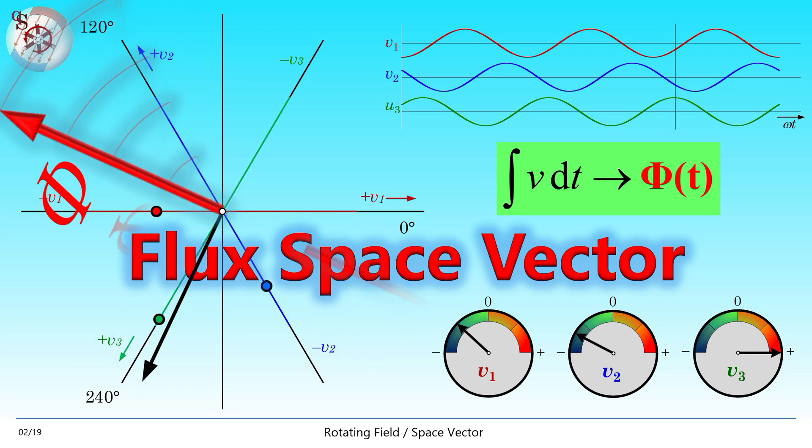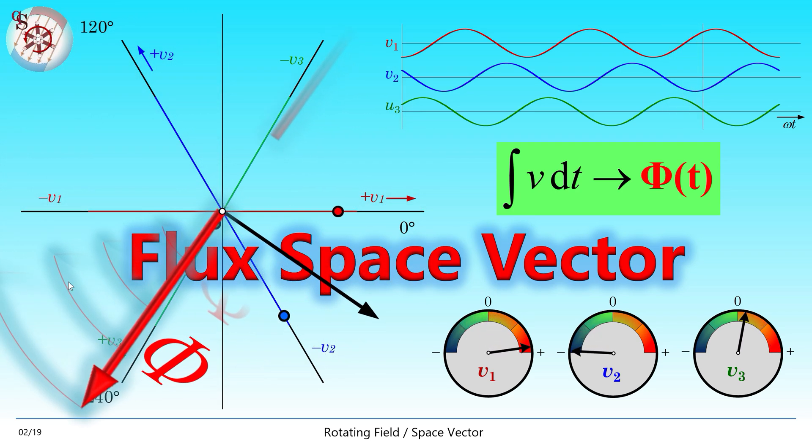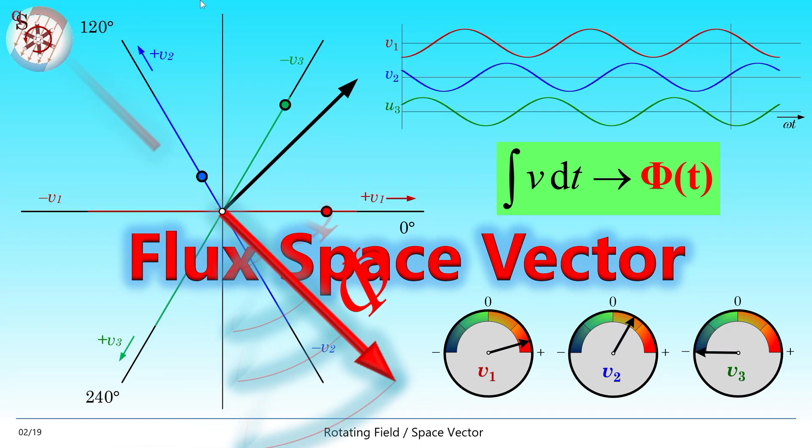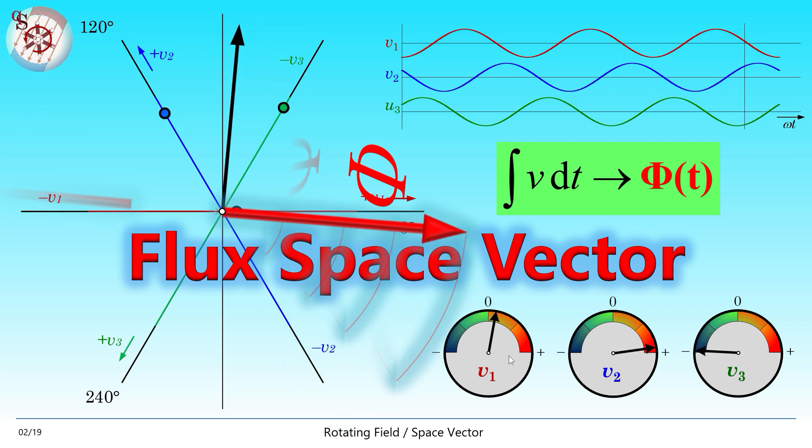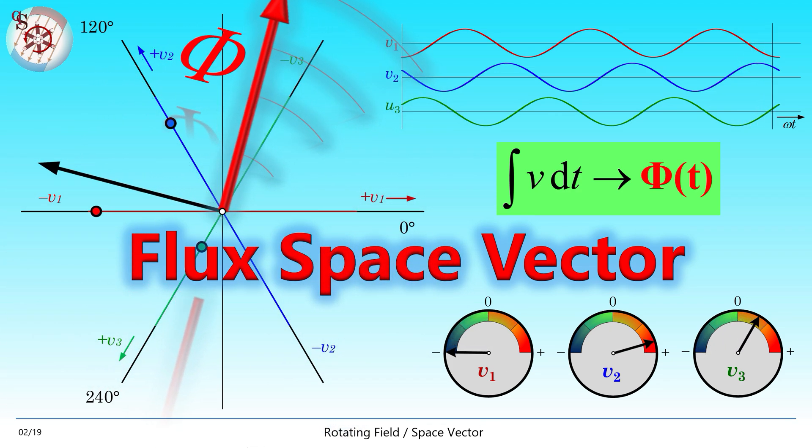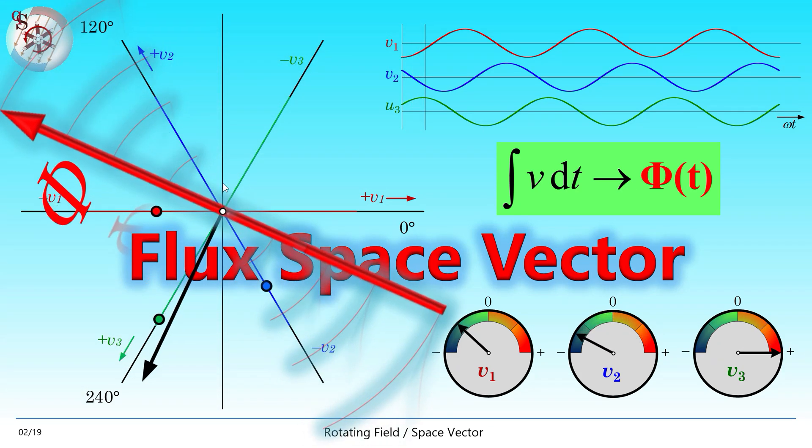Finally, we have to understand that the flux vector does not start somewhere in the middle of the machine. Flux lines are closed loops and run through the entire machine. And the interesting part of the flux is of course the part between the coils that creates the shown finite flux vector.